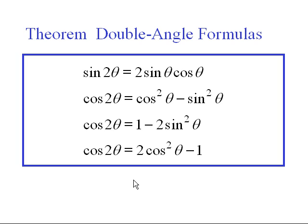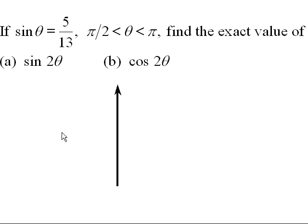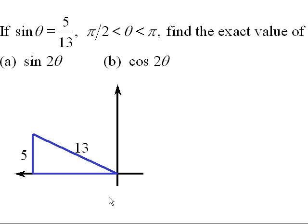Let's look at a standard application of the double angle formulas. We're given a value of a trig function and some geometric information: sine of theta is five thirteenths, and the angle is in quadrant two. We want to use those facts to find the exact values of the sine and cosine of the double angle. We'll draw a triangle with side opposite five and hypotenuse thirteen, with the angle in quadrant two.